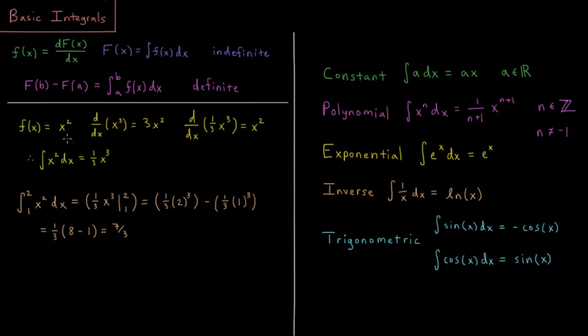We saw that in the x squared example: n is 2, so 1 over n plus 1 is one-third, and x to the n plus 1 is x cubed.